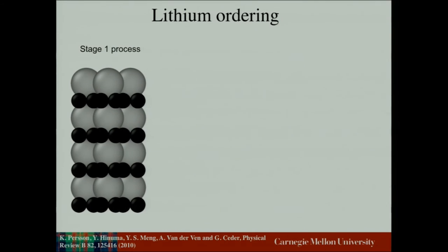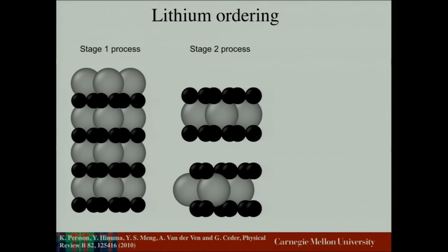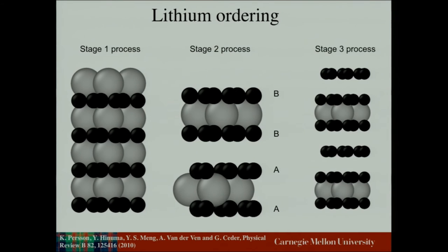I'll describe the nomenclature used for intercalation processes in graphite. A stage-one process means there is one layer of graphene between occupied layers of lithium — the large gray balls are lithium. A stage-two process has two graphene layers between occupied lithium layers. Note that lithiated phases prefer AA configuration while empty phases prefer AB configuration, giving an AABB stacking pattern. You can also have higher-order processes: stage three means three layers in between, stage four, and so on.